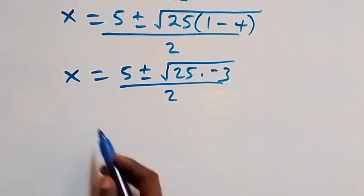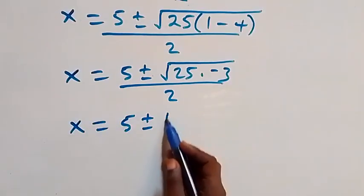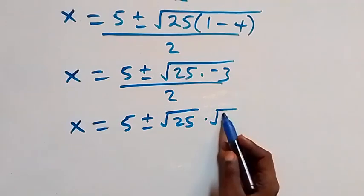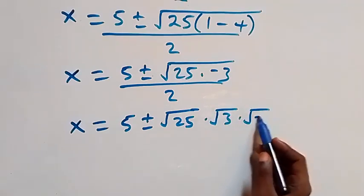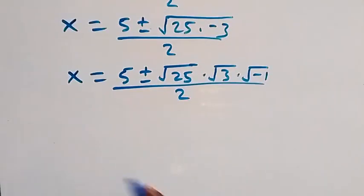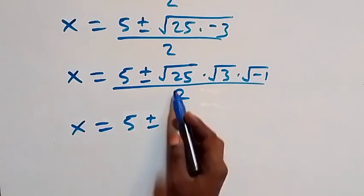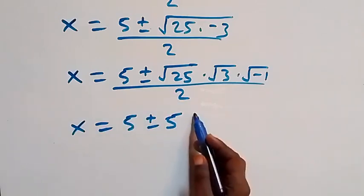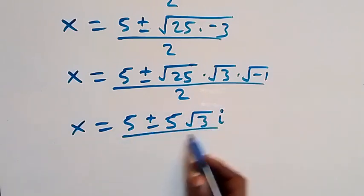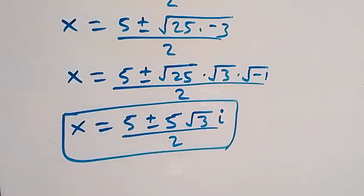Separating the radical, x equals 5 plus or minus root of 25 times root of 3 times root of negative 1, over 2. Since root of 25 is 5 and root of negative 1 is i, we get x equals 5 plus or minus 5i√3, over 2. These are two complex solutions.